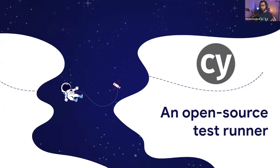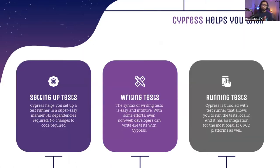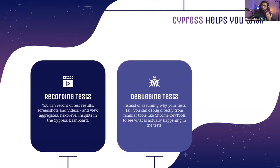Cypress is an open-source test runner for testing web applications, whether locally or against a deployed application. It provides a complete framework and tooling, coming bundled with a Chromium engine. It supports multiple browsers and provides ease of configuration. You can run tests against a local app or a deployed application — it really depends on your situation.